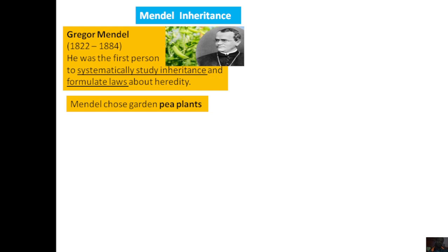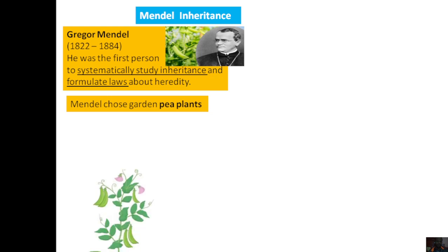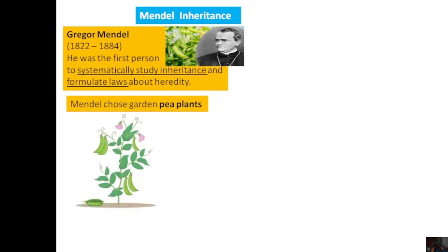Another advantage of the pea plant is that they have a lot of different contrasting traits and a lot of different characters. That's why Mendel chose this pea plant over other plants.